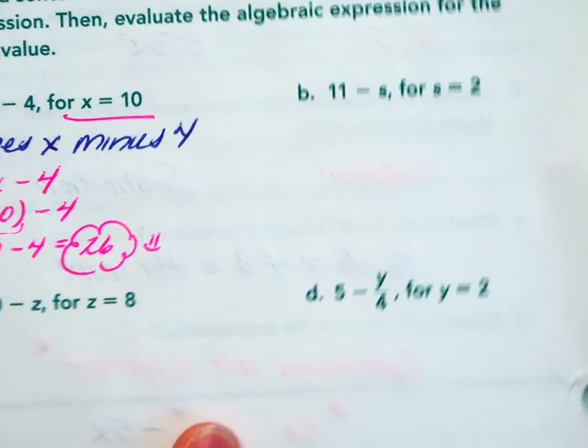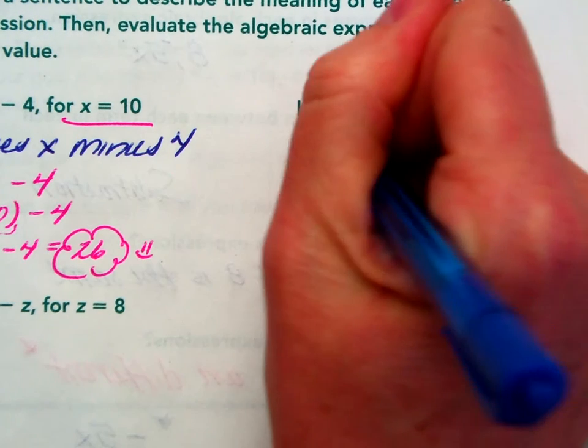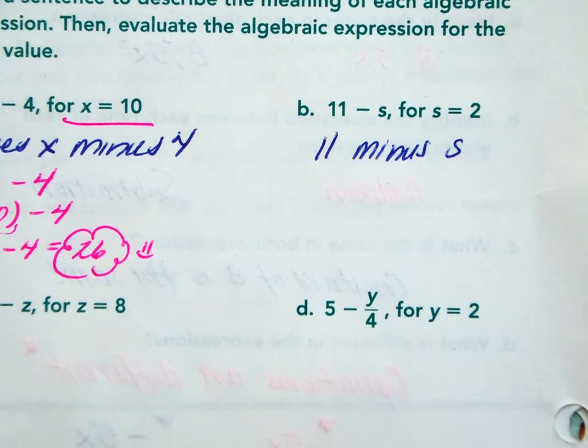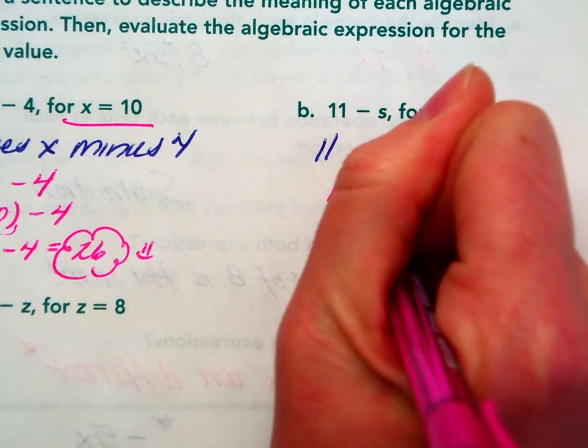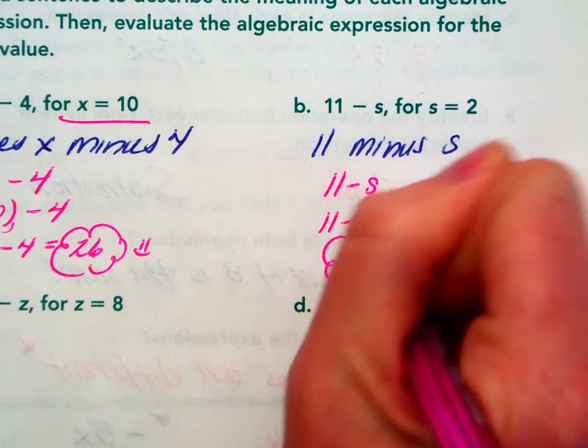Now, I'm going to move on to B. 11 minus S. Written as words. 11 minus S. S is now worth 2. So, if it's 11 minus S, it's 11 minus 2, which is the same as 9.